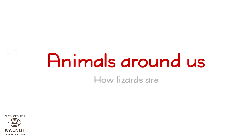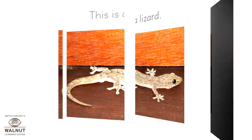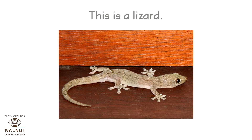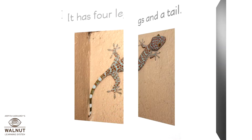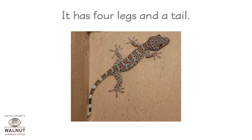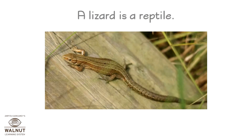Animals around us. How are lizards? This is a lizard. It has four legs and a tail. A lizard is a reptile.